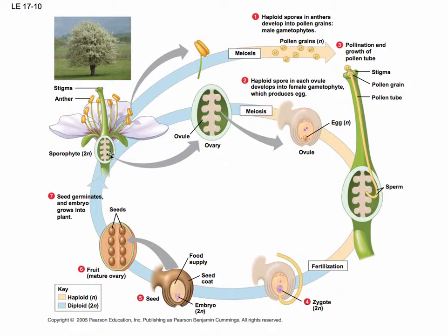In the base of the flower, in the ovule, you have haploid spores produced that develop into a female gametophyte that produces the egg — and that's what they're showing here. After pollination, the pollen produces a pollen tube down which the sperm swim, so they don't require external water; everything is internal to the flower. The sperm fertilize the egg that is produced by the female gametophyte, and the result is a zygote.